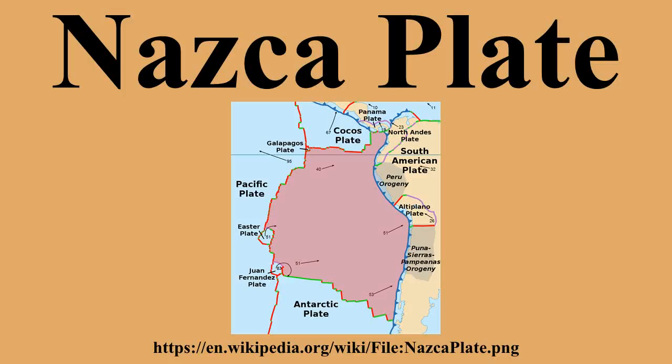The southern side is a divergent boundary with the Antarctic Plate — the Chile Rise — where sea floor spreading permits magma to rise. The western side is a divergent boundary with the Pacific Plate, forming the East Pacific Rise. The northern side is a divergent boundary with the Cocos Plate, the Galapagos Rise. The subduction of the Nazca Plate under southern Chile has a history of producing massive earthquakes, including the largest ever recorded on Earth.